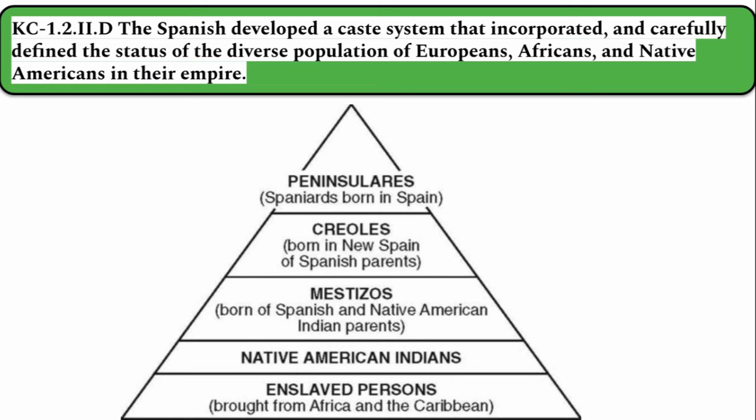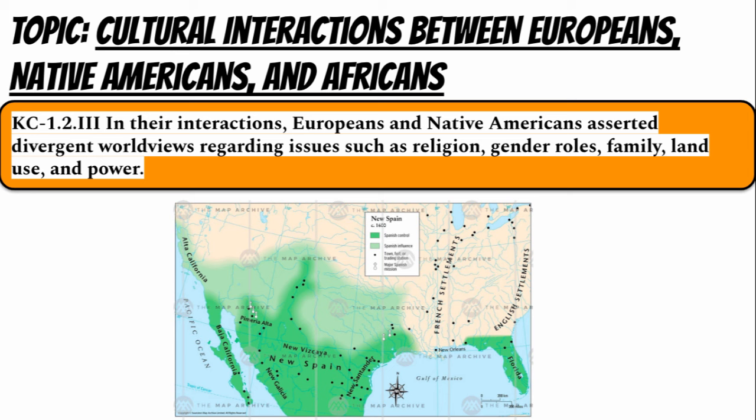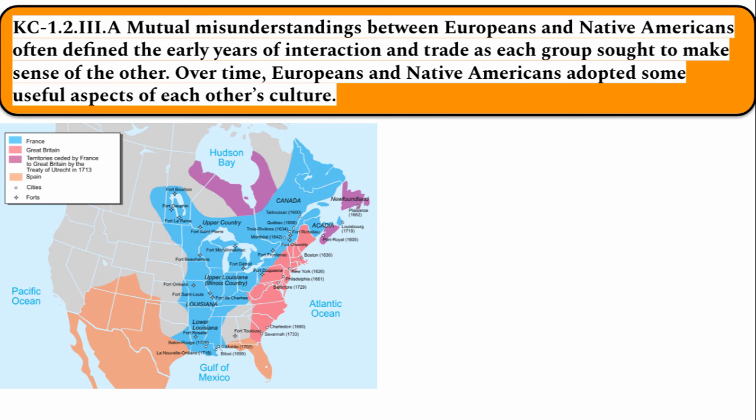The last big idea of Period 1 is cultural interactions between Europeans, Native Americans, and Africans. In their interactions, Europeans and Native Americans asserted divergent world views regarding issues such as religion, gender roles, family, land use, and power. By the end of the 16th century, Spain had control over most of South America, Central America, parts of the Caribbean, and what would become Mexico and the American Southwest. The colonization by various European powers was built on the belief that European civilization was superior. As a result, mutual misunderstandings between Europeans and Native Americans often defined the early years of interaction, as each group sought to make sense of the other. Over time, Europeans and Native Americans adopted some useful aspects of each other's culture.